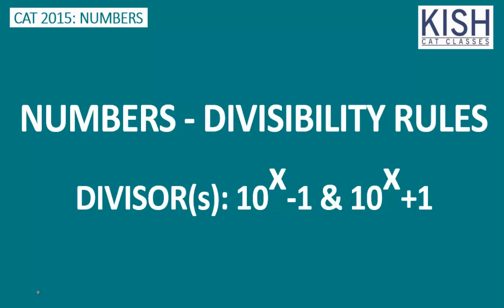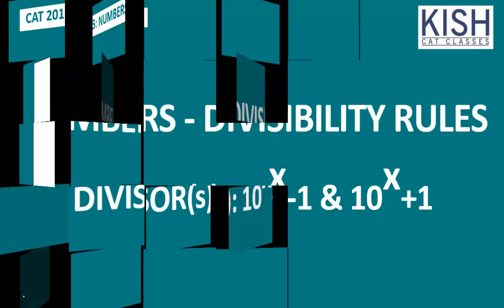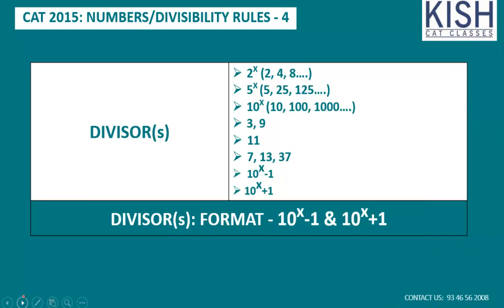Hi, welcome to the final session on divisibility rules. In the previous three sessions, we have learned: if the divisor is of the format 2^x, 5^x, or 10^x; in the second session, divisors 3, 9, 11; and in the last session, divisors 7, 13, 37. In all three sessions we learned how to find the remainders whenever the divisors are 2^x, 5^x, 10^x, or 3, 9, 11, 7, 13, 37.